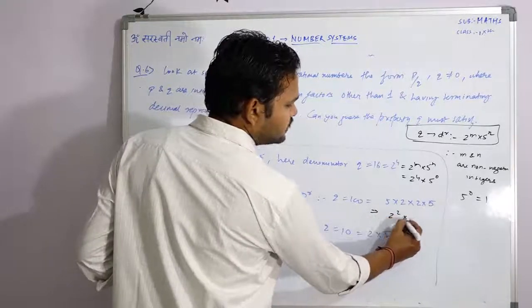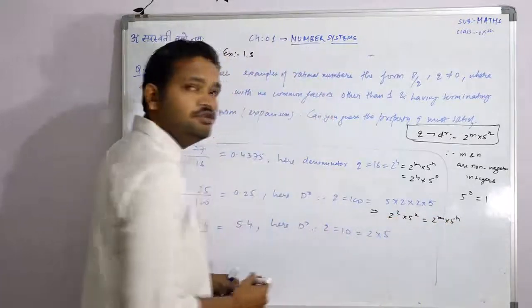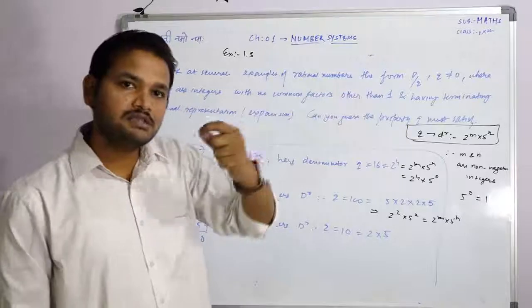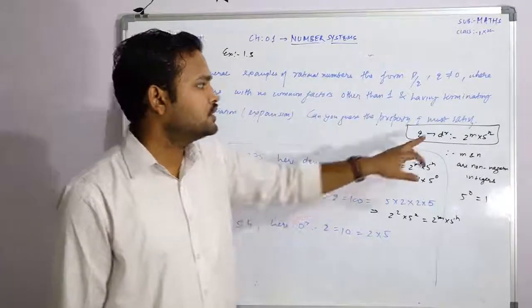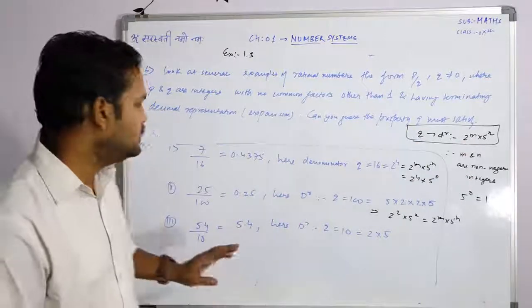It means here, 2 square into 5 square. 2 raised to m into 5 raised to m. It means this shows that q is a special property. Q can be expressed in the form of 2 raised to m into 5 raised to m.